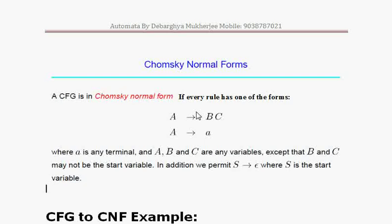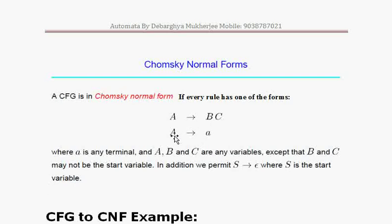A CFG is in Chomsky Normal Form if every rule has one of these forms: A → BC, meaning the left side is a non-terminal and the right side has two non-terminals; or A → a, meaning the left side is a non-terminal and the right side is a single terminal character. Here, 'a' can be any terminal and A, B, C are variables, also called non-terminals.